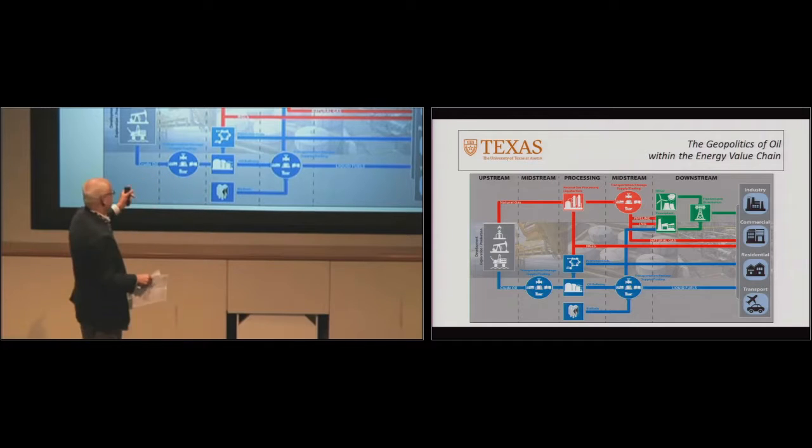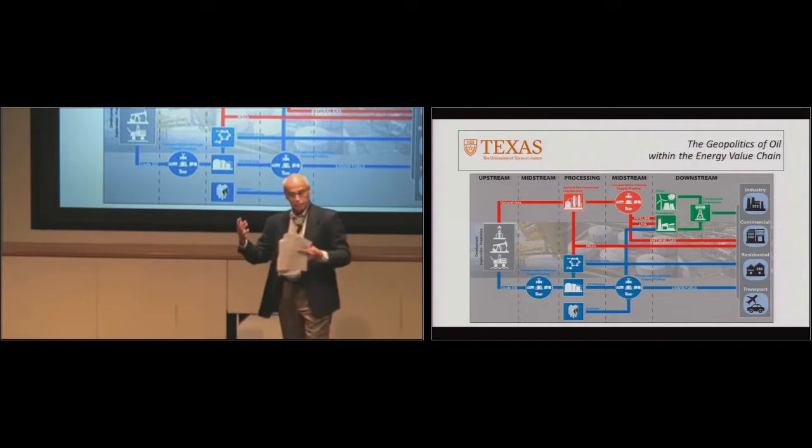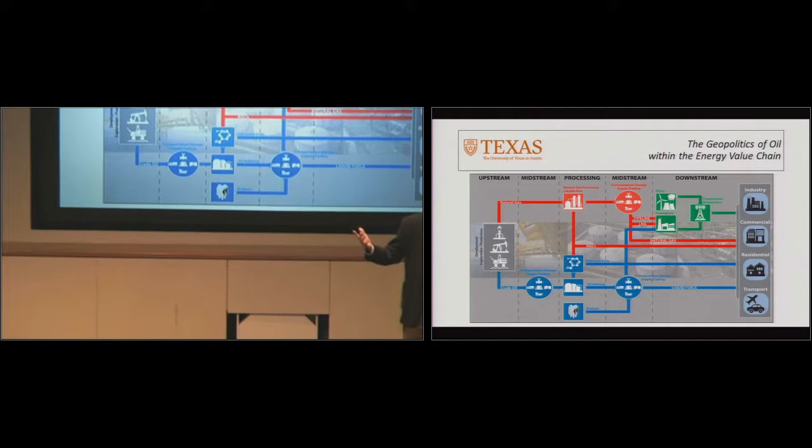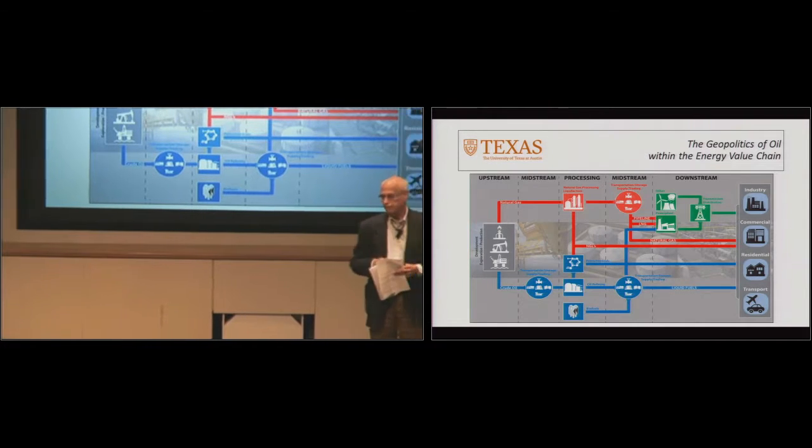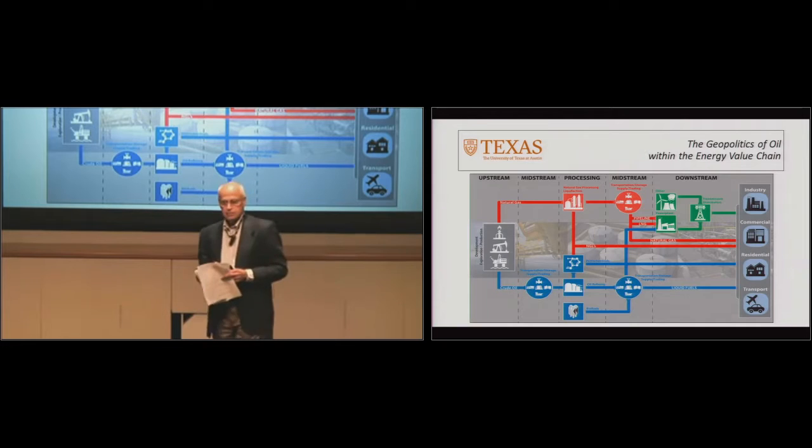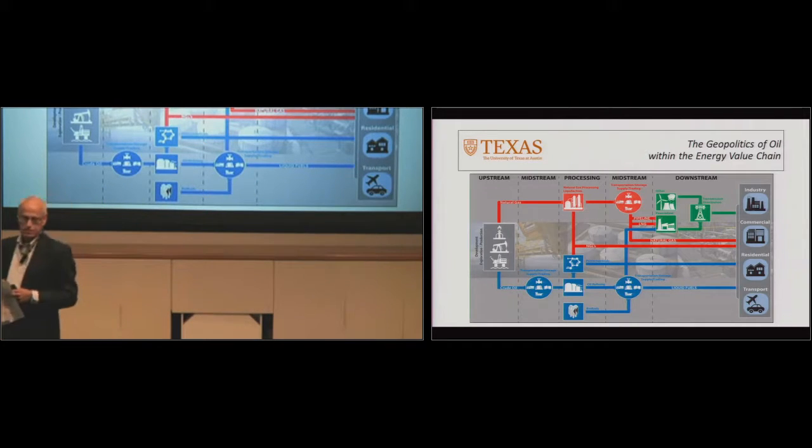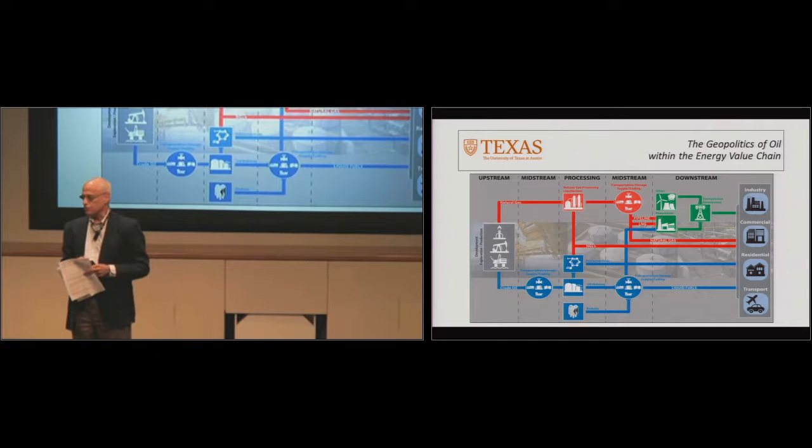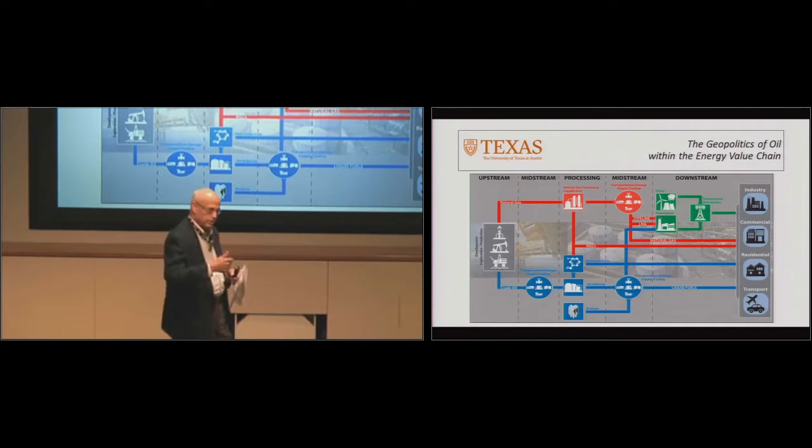So those are the things that I want you to think about when we talk about the geopolitics of oil. It's not only in the upstream, it also belongs in the midstream pipelines, and it also belongs on the other end, refining. We're going to talk about it here in a minute. The U.S., for the first time, is a net exporter. Let me repeat that again. For the first time ever, the U.S. is a net exporter of refined products. Our U.S. Gulf Coast refineries are running at 91% of capacity. We have become the de facto refining center for Latin America.